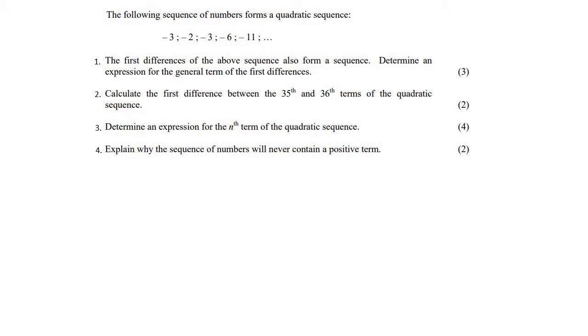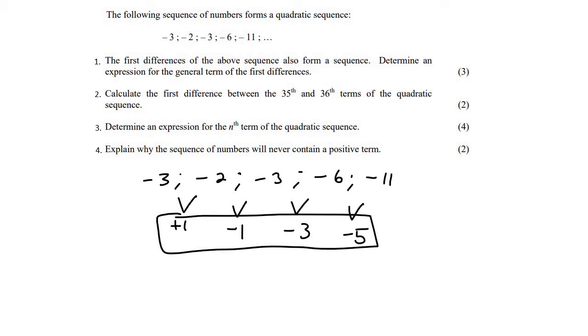In question one, they say the first differences. So let's just quickly talk about what the first differences are. So if I have a sequence, let me just write this down. Now, if I go down one level, then this is going to be plus one, minus one, minus three, minus five. This row over here is called the first differences.